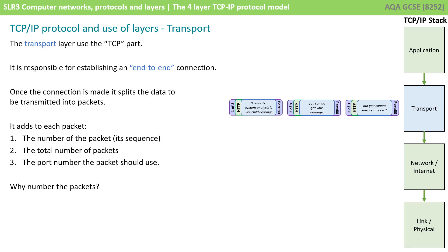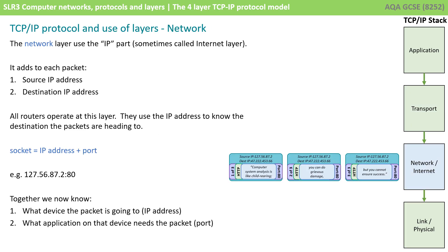Why do we need to number the packets? This comes down to how data packets travel across the internet. There's a good chance that packets may arrive at the destination computer out of order, and the sequencing numbers added by the transport layer allow the receiving computer to reassemble the packets in the correct sequence. We then get passed down to the network layer, sometimes referred to as the internet layer, which uses the IP part of the TCP/IP protocol. It adds to each packet a source IP address and a destination IP address, and again our data is wrapped up with this additional information.